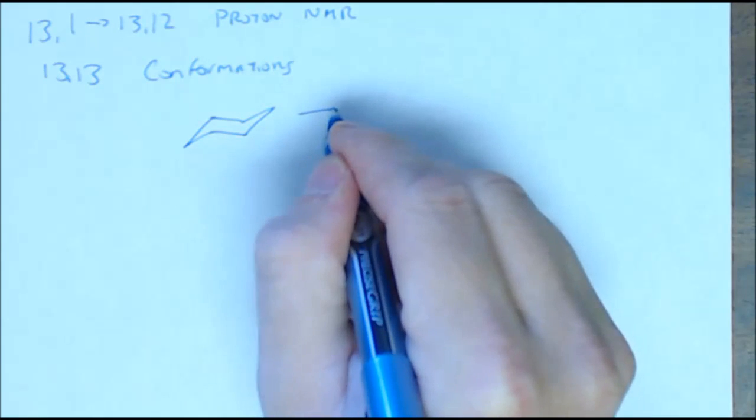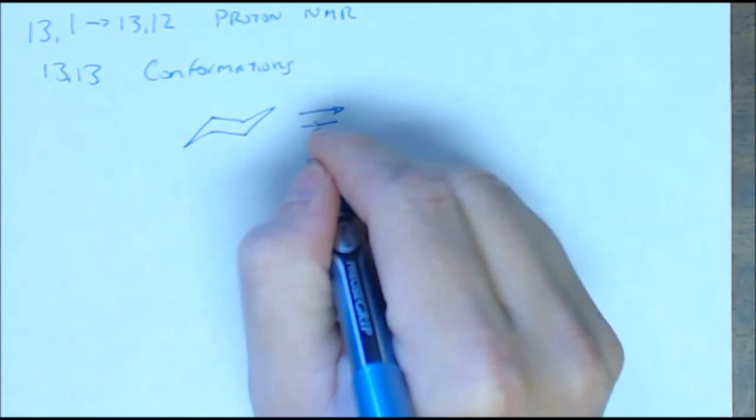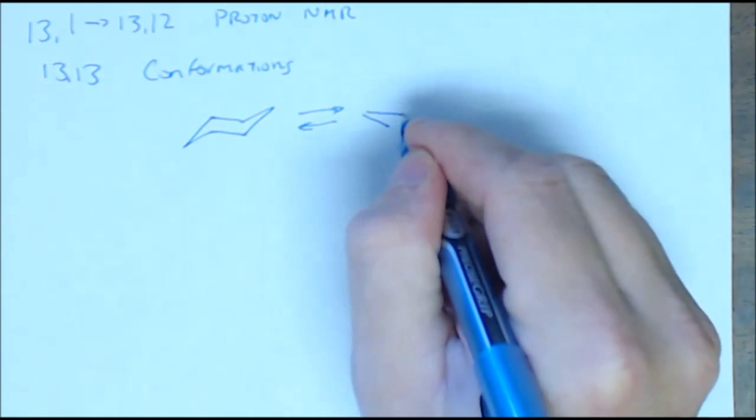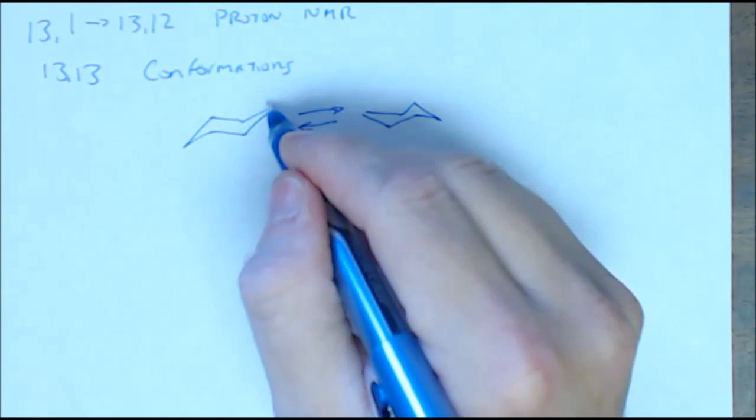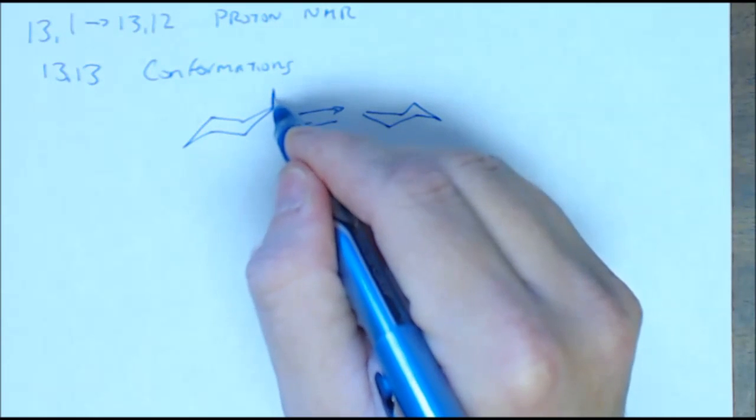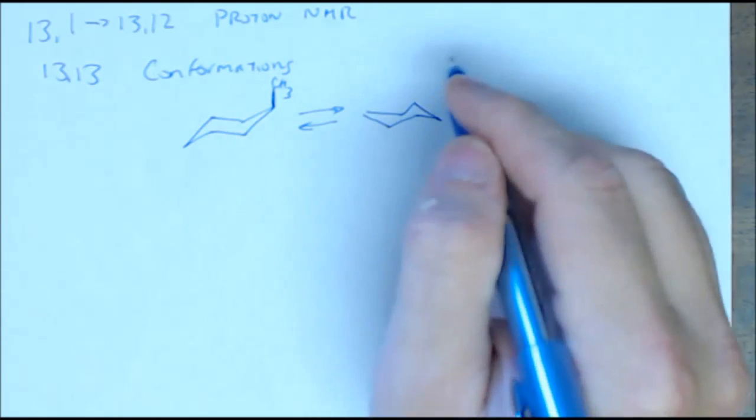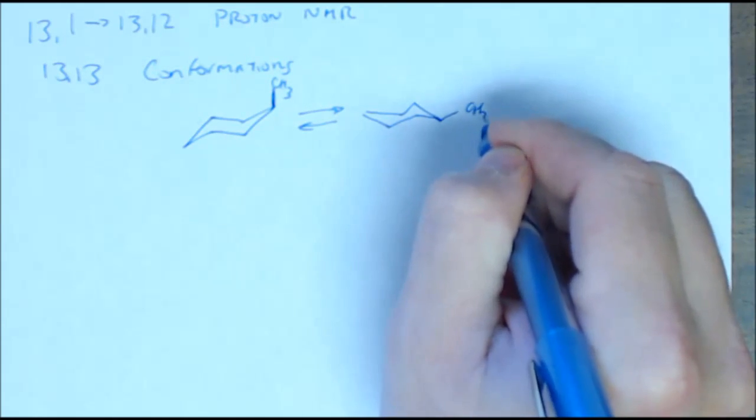Generally, you've seen this is that when you have a cyclohexane, the cyclohexane interconverts into one chair form to another. And if I have something that's in the axial position up here, like a CH3, that interconverts to go to the equatorial position. These are two different conformations.